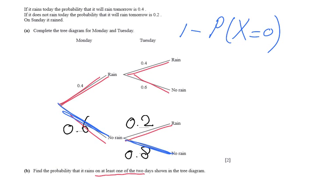So that is 1 minus what is the chance that it will not rain two consecutive days. That is 0.6 times 0.8, so that is 1 minus 0.48.